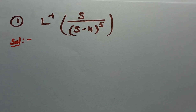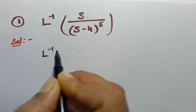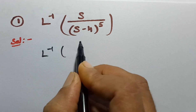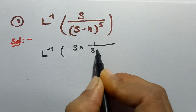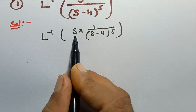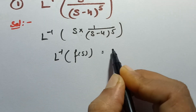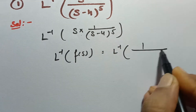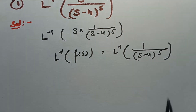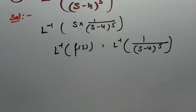Here is one problem for you. There is a multiplication with s, so I'll write the inverse Laplace transform of s × 1/(s−4)^5. I have to leave s for some time and make the inverse Laplace transform of F(s), which is 1/(s−4)^5.